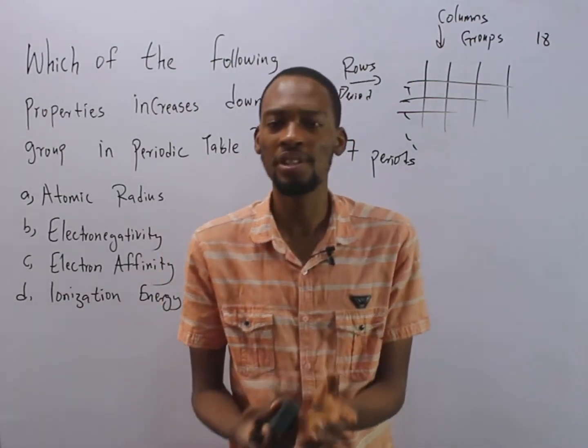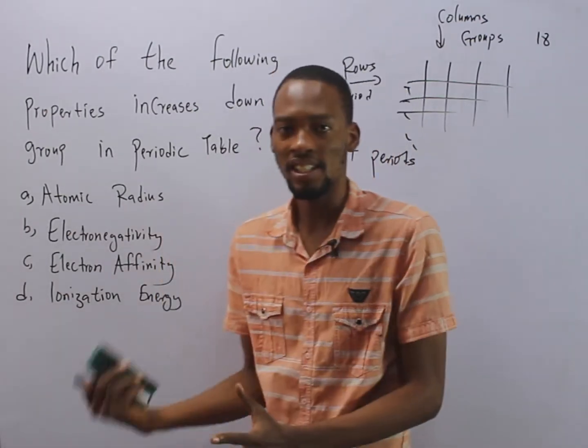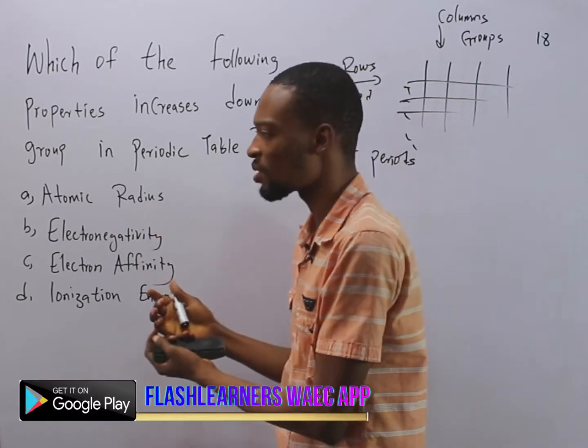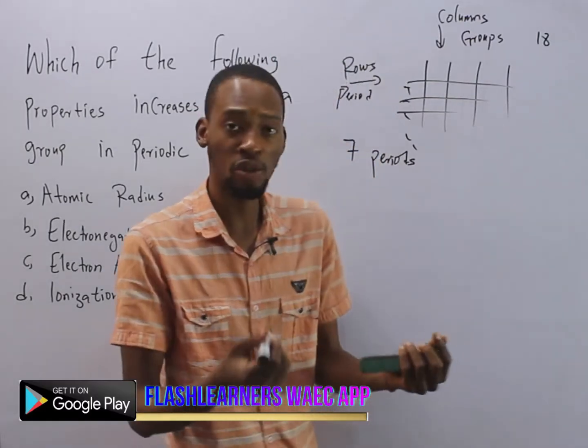Now, these groups and periods, they have certain properties. So we have atomic radius. This is the size of the atom or element.